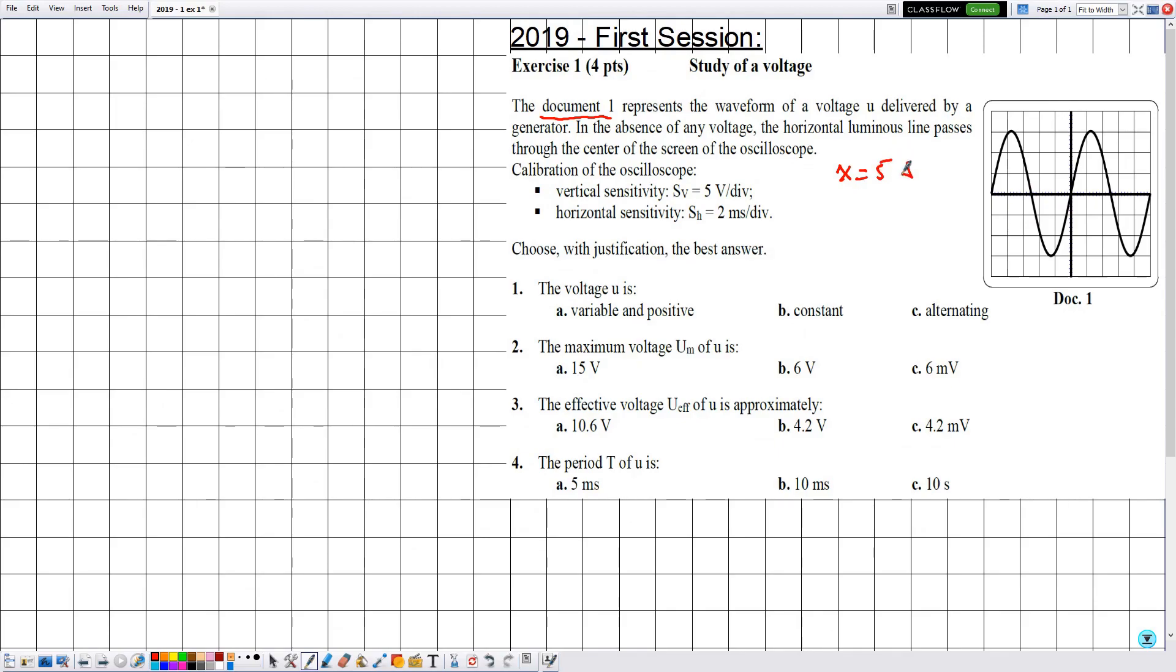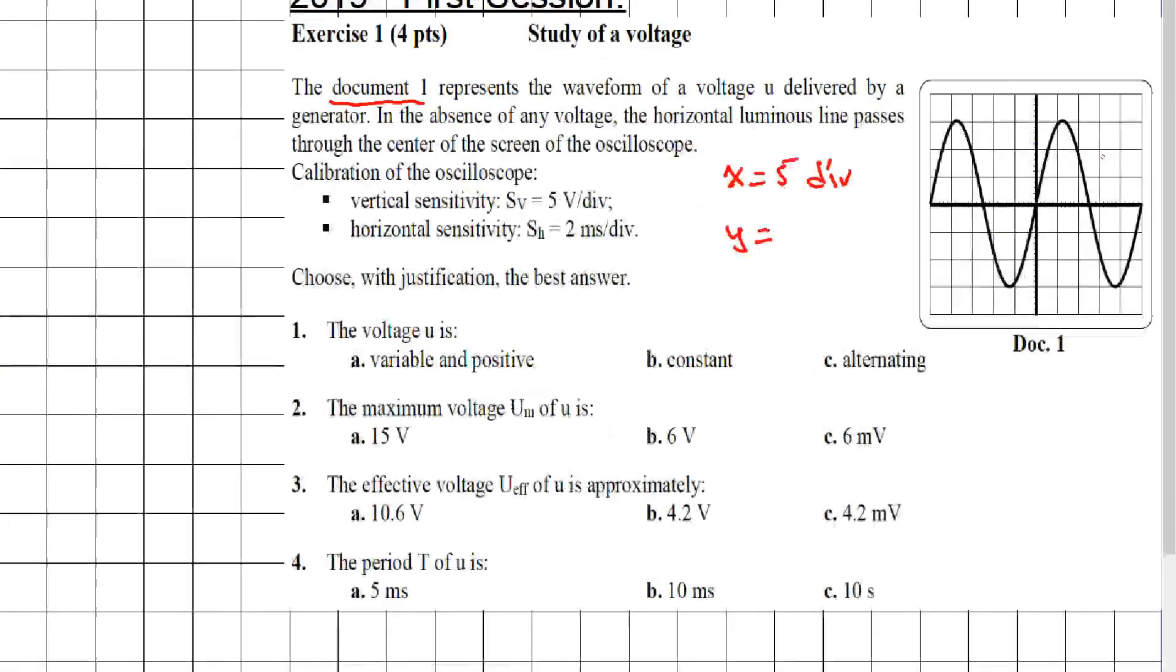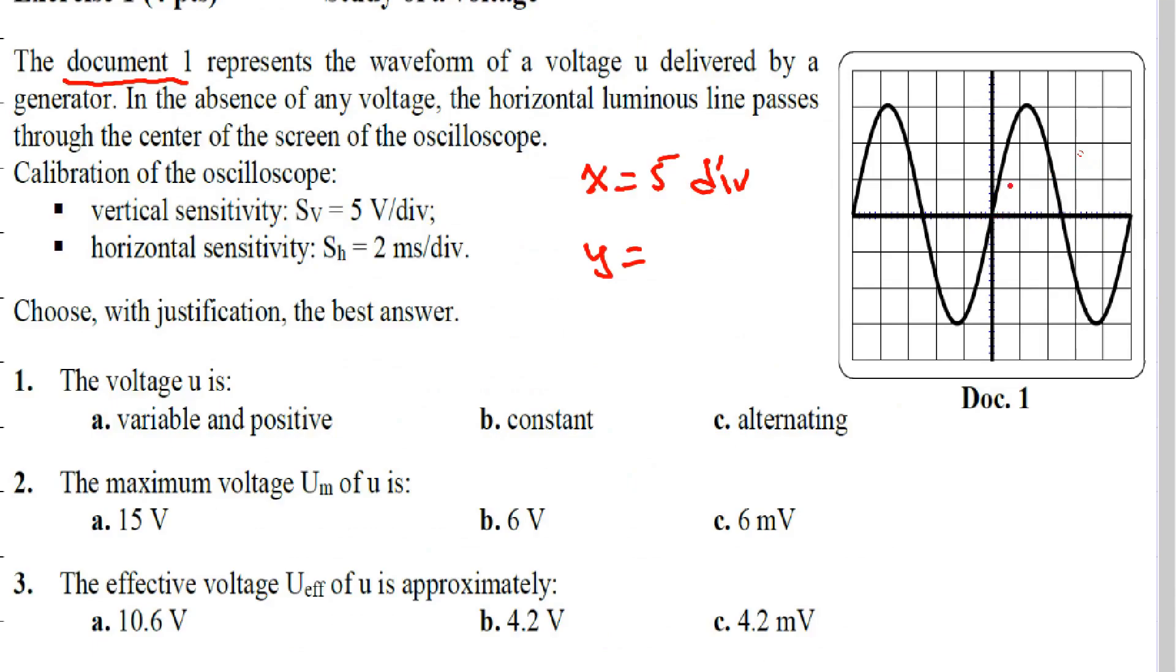So x equals five divisions. Now the value of y corresponds to the maximum number of divisions reached by the waveform, which is the peak: one, two, three. Then y equals three divisions.